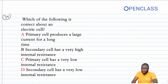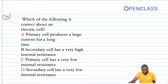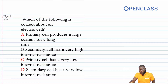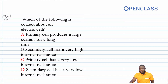Looking at the options: option A says primary cells produce a large current for a long time — that's not correct, that's an attribute of secondary cells. Option B says secondary cells have very high internal resistance — that's not true; secondary cells have very low internal resistance. Option C says primary cells have very low internal resistance — also not correct. Option D, secondary cells have very low internal resistance — that is the correct answer.